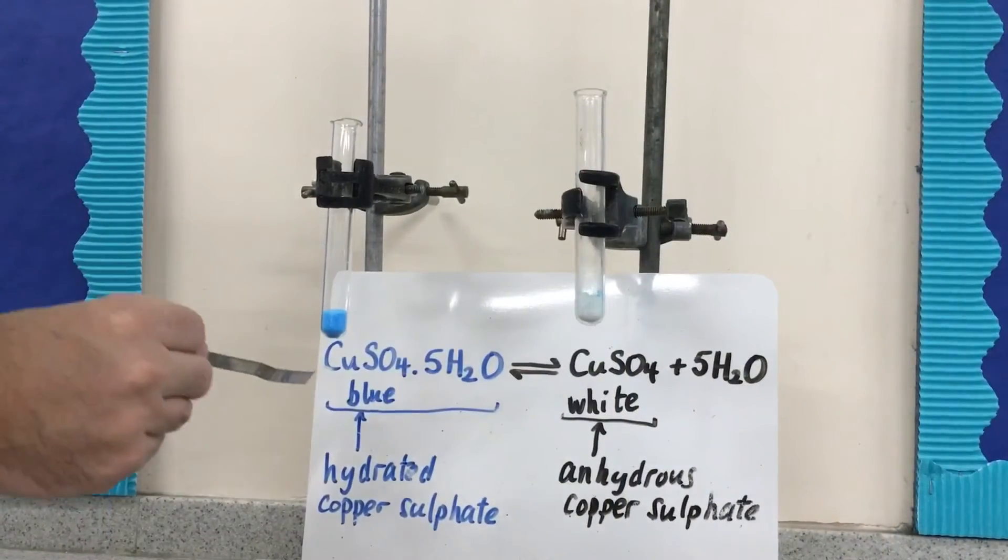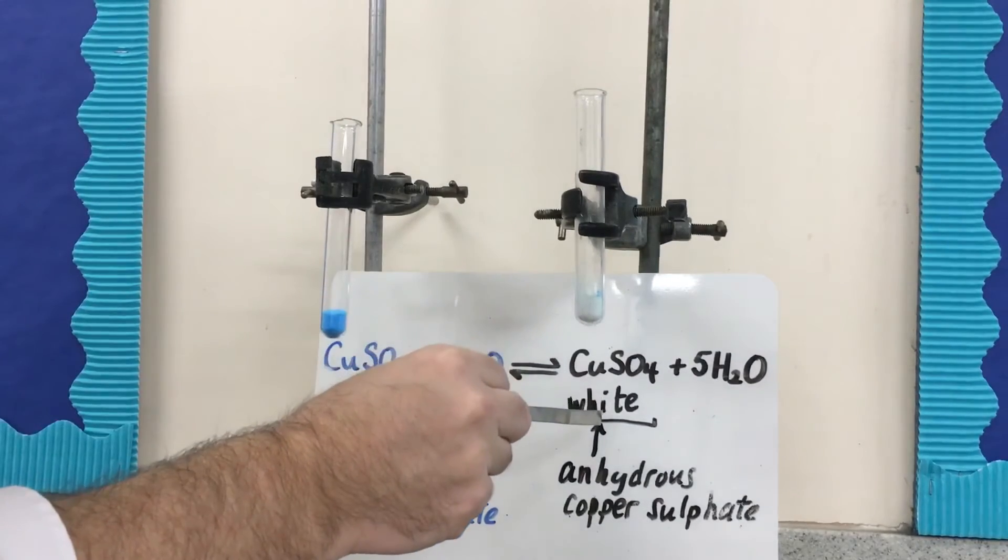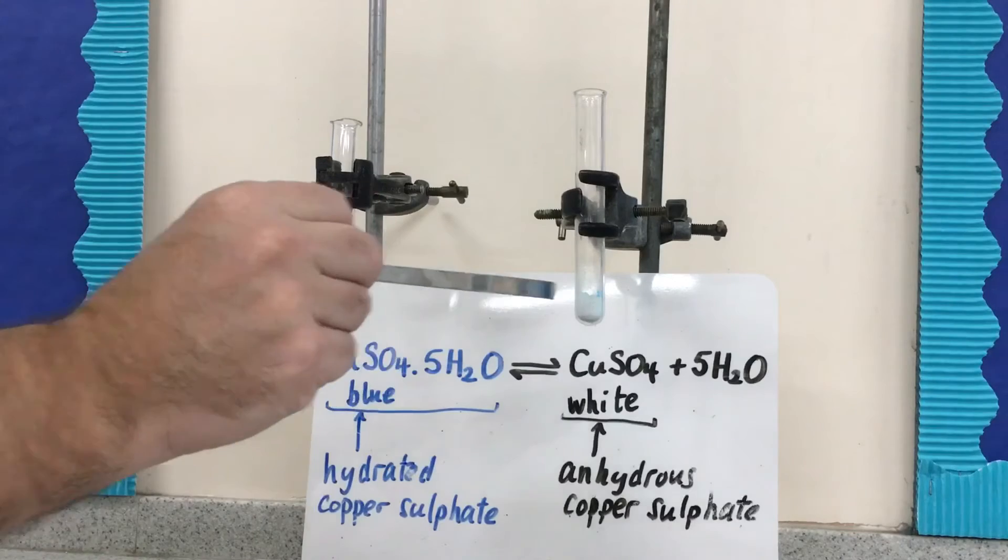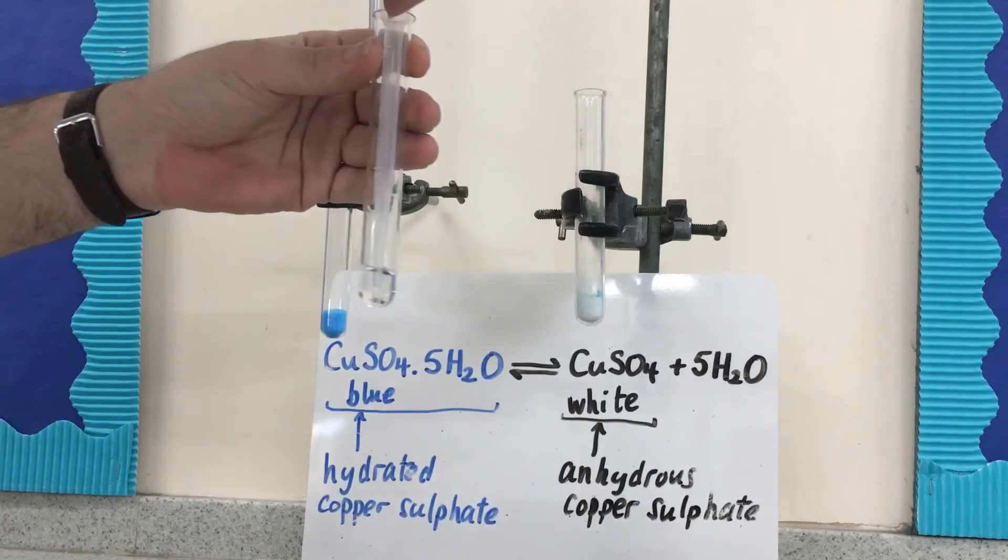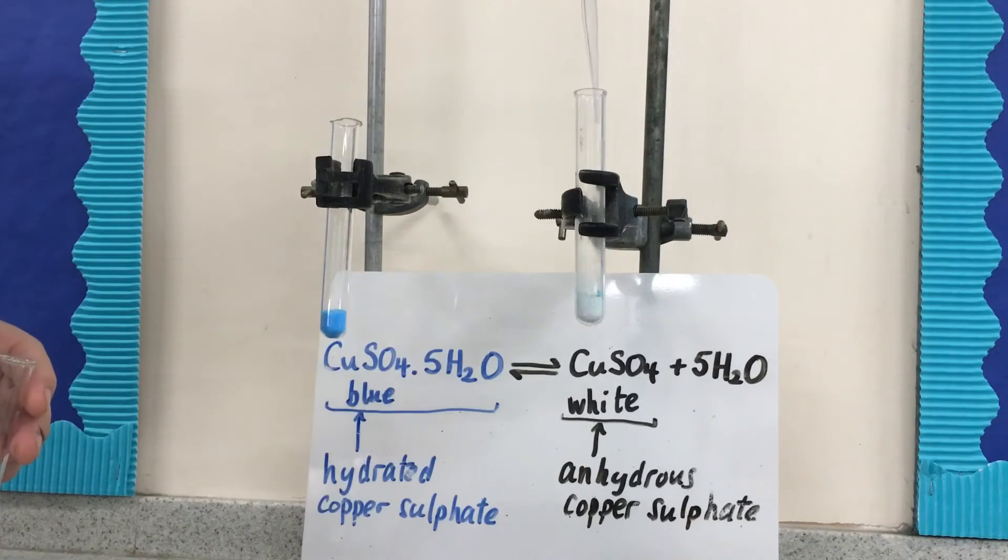Because we know that blue copper sulfate turns white when water is removed, we can turn anhydrous or white copper sulfate blue by adding water. So if anhydrous or white copper sulfate turns blue when a liquid or solution is added, we know that the liquid or solution that we're adding contains water. So this is some water. If we add it to our white copper sulfate, it'll turn blue.